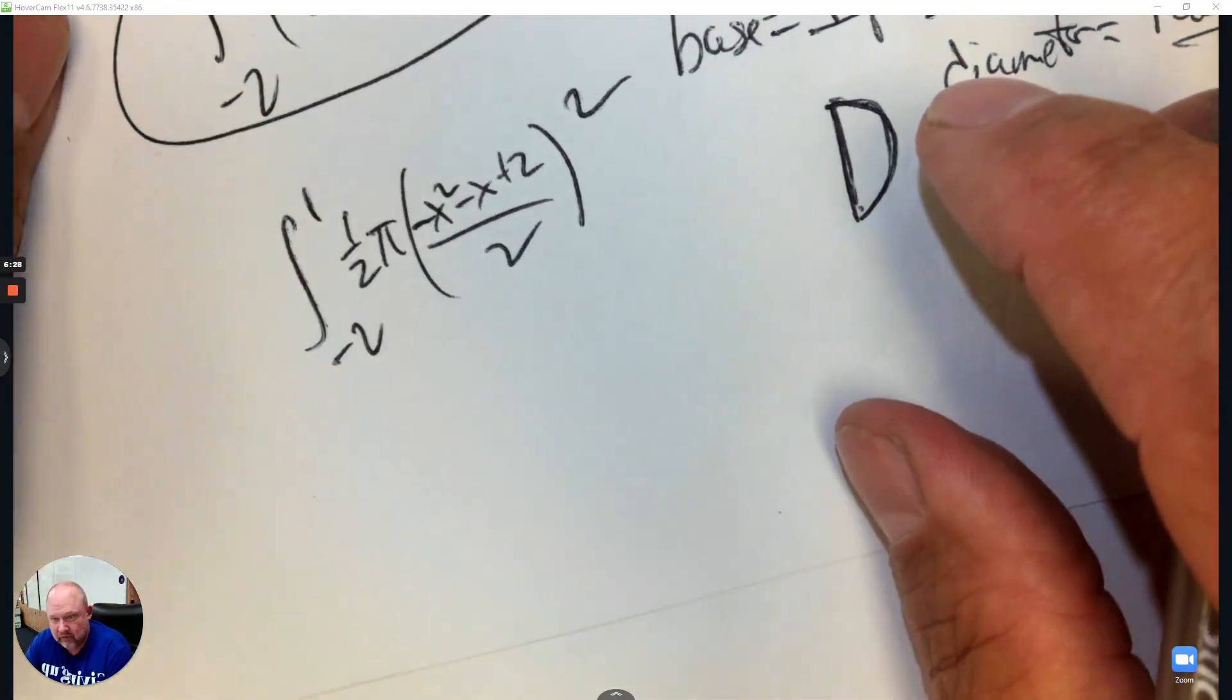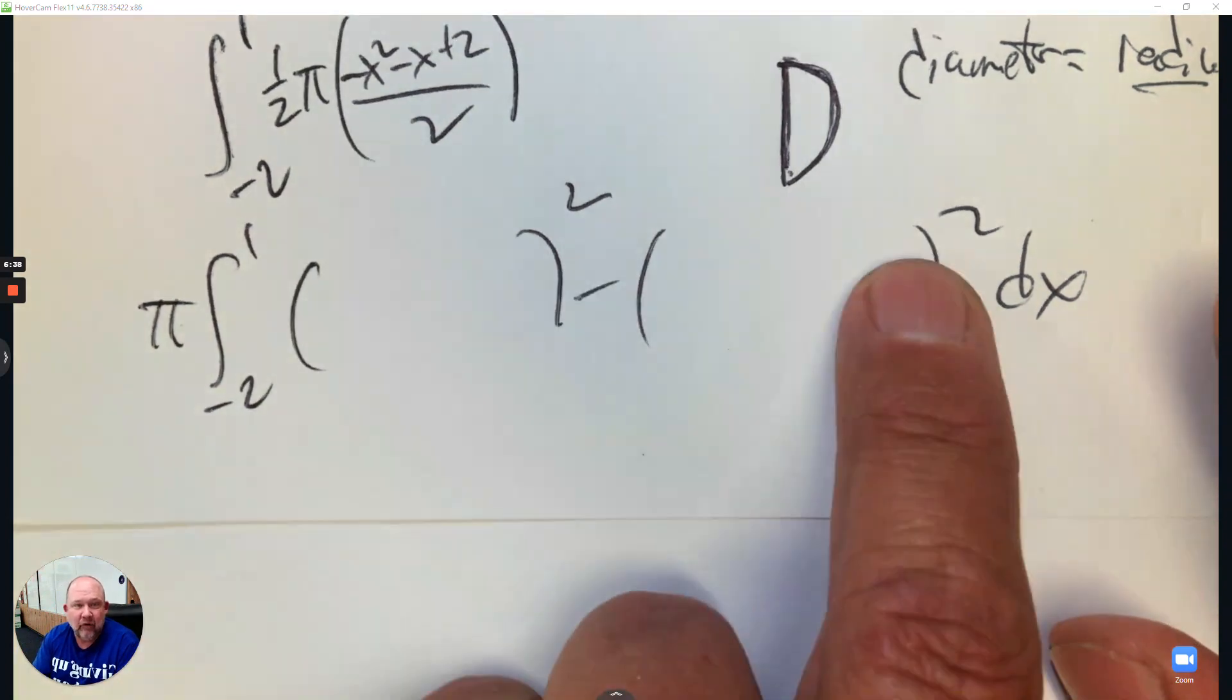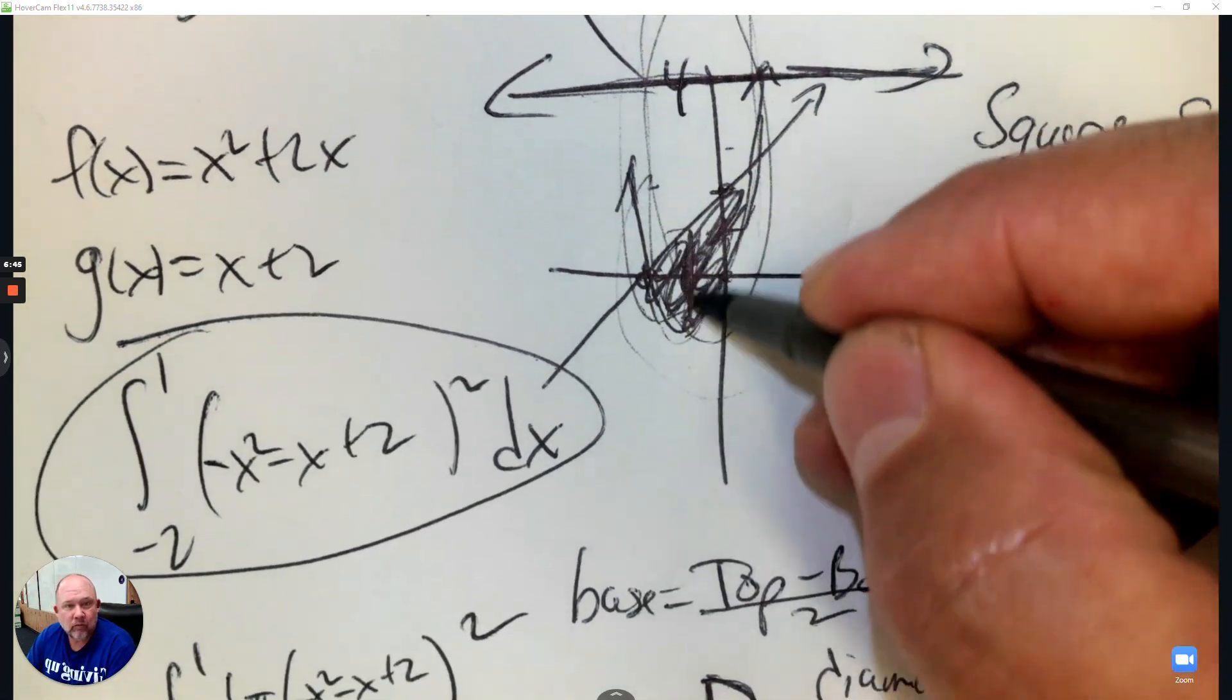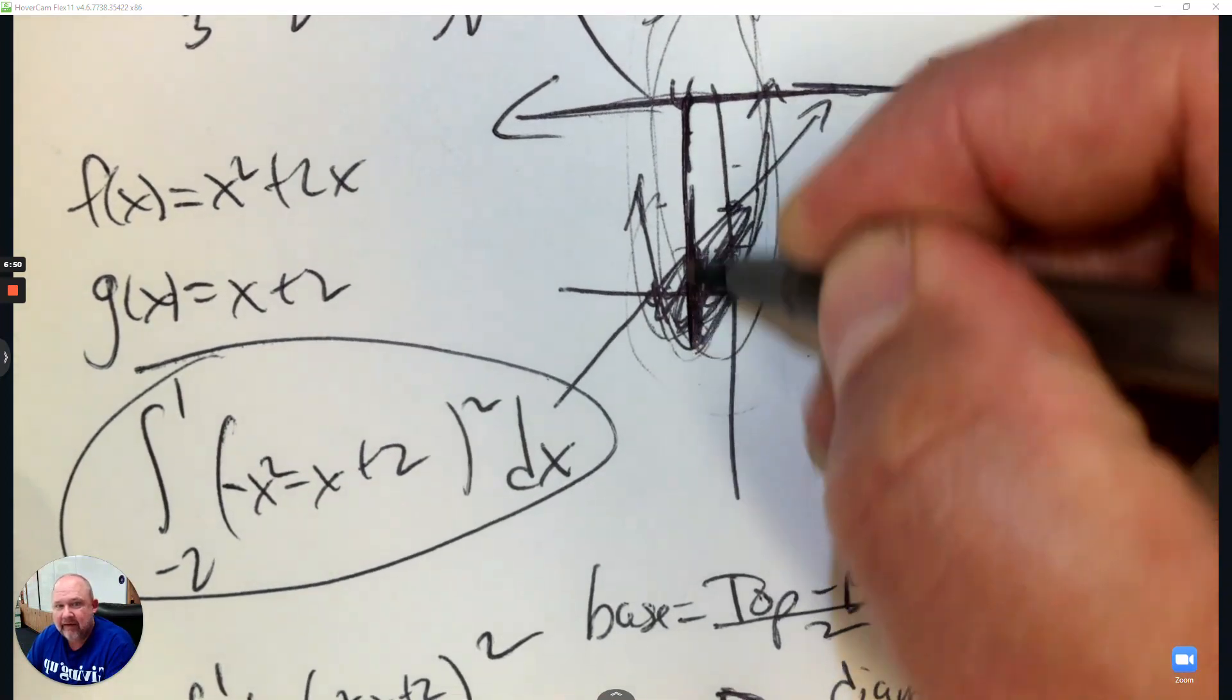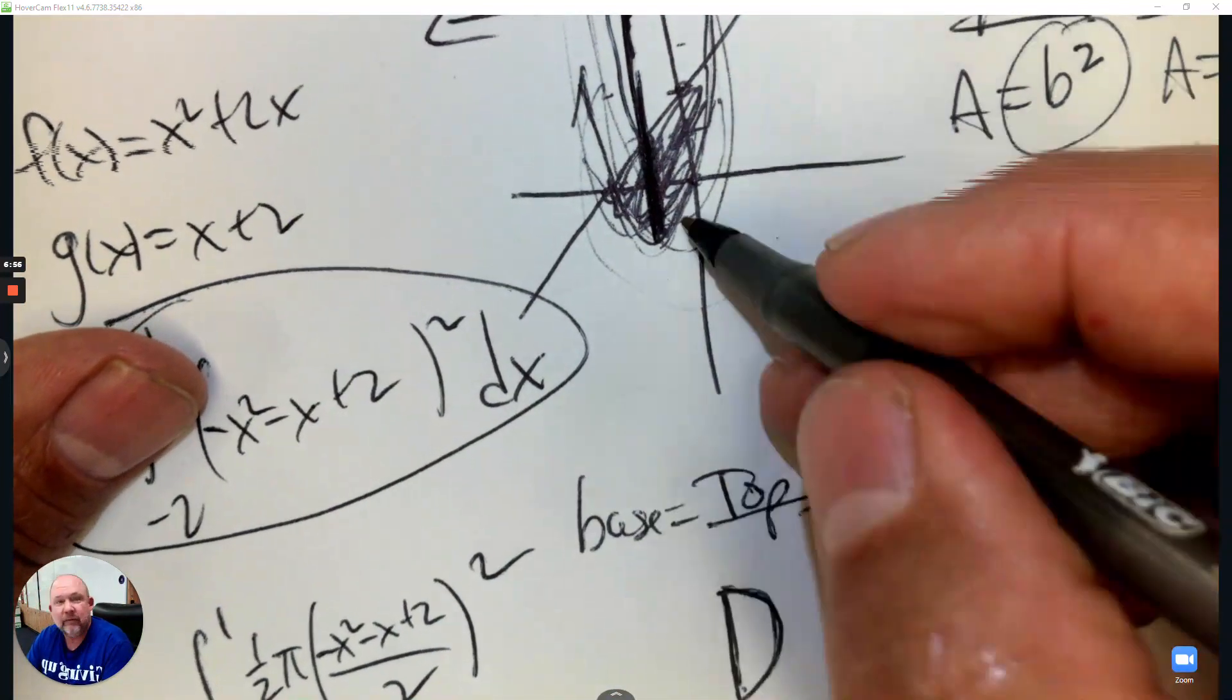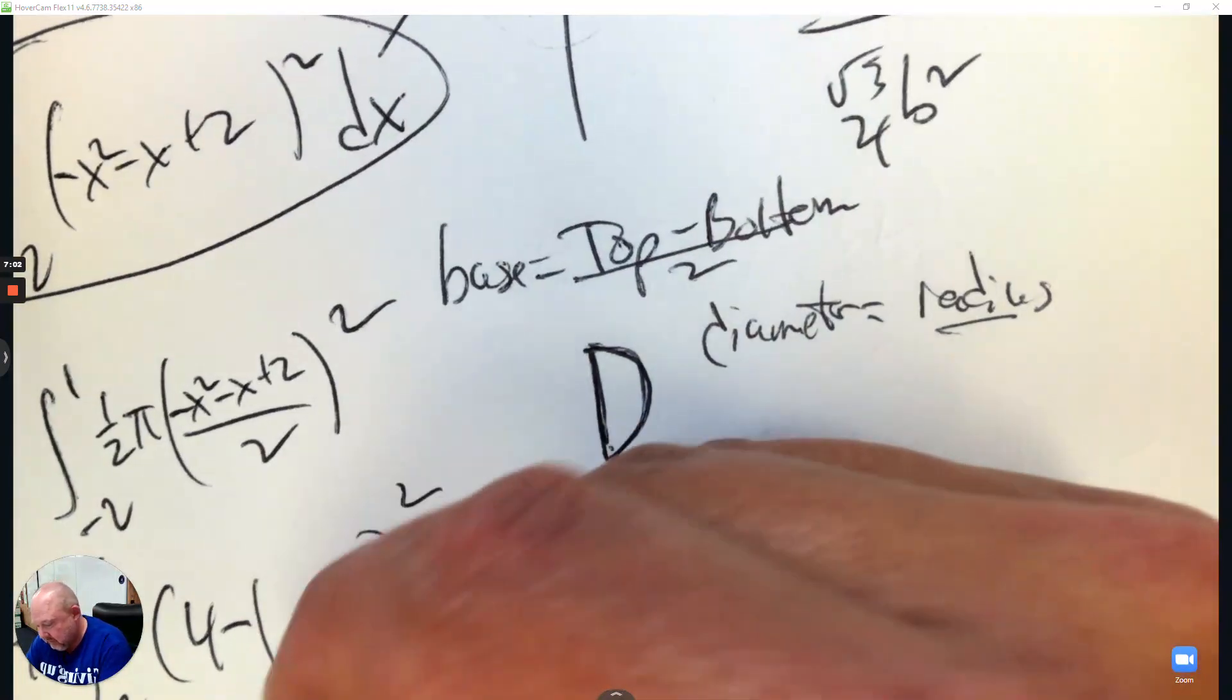So the big circle, so this way is from negative 2 to 1. So we have the big circle minus the small circle. All right. So the big circle goes from the line of revolution all the way down to the bottom. And again, we go top subtract bottom. So the top here is 4, and then I subtract what's on the bottom of it, which is the parabola, which is x squared plus 2x.